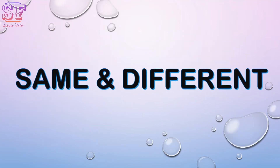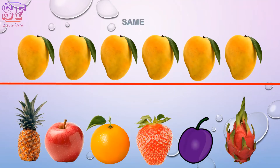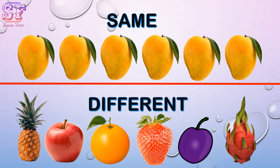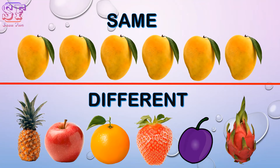Our second concept is same and different. Same — same type of mangoes. Different — all are different types of fruit.